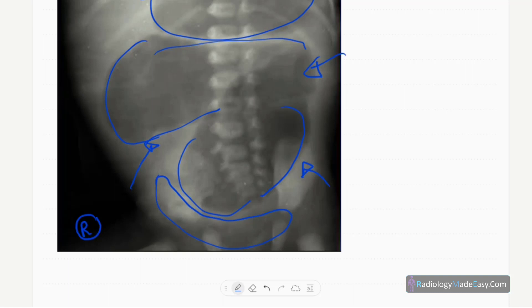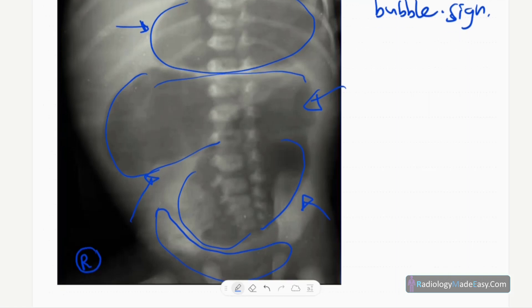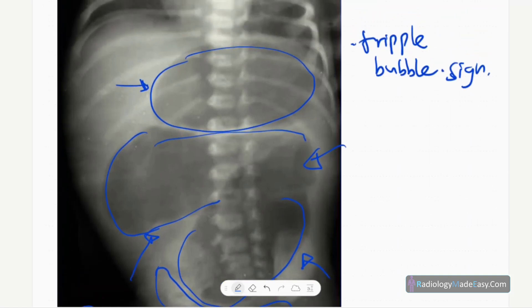bowel loops are collapsed. Probably ileal and large bowel loops are collapsed and you don't see any free abdominal